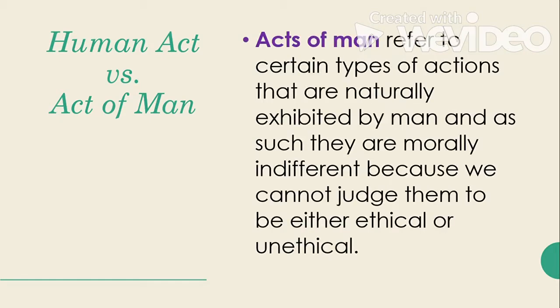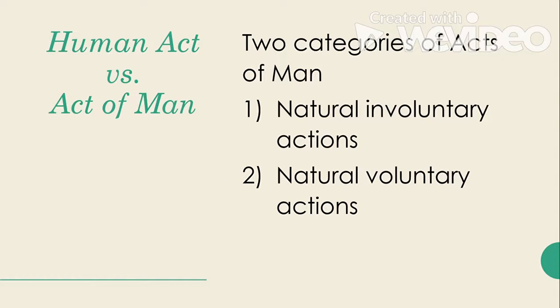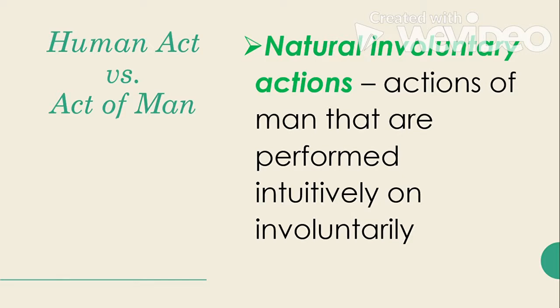On the other hand, acts of man refer to certain types of actions that are naturally exhibited by man, and as such they are morally indifferent because we cannot judge them to be either ethical or unethical. These are the usual actions of man. However, acts of man can become human acts when one employs intellect and will in performing the act. We have two categories of acts of man: natural involuntary actions and natural voluntary actions. Natural involuntary actions are performed intuitively or involuntarily — examples include blinking of the eyes, the body's metabolism, perspiration, and the beating of the heart.